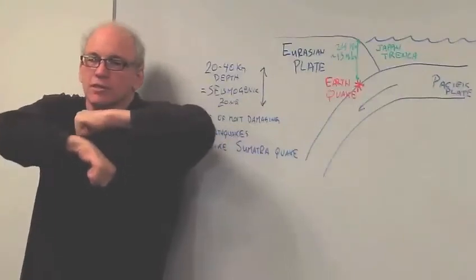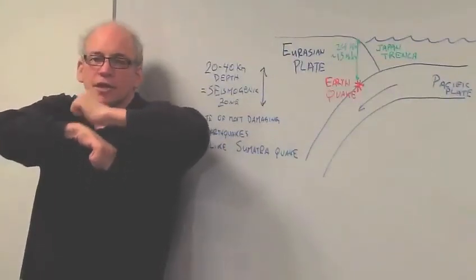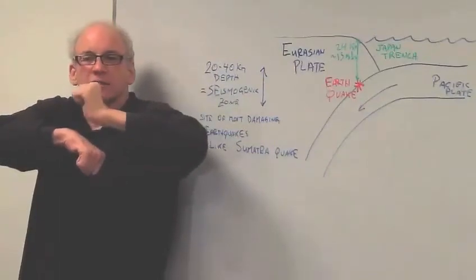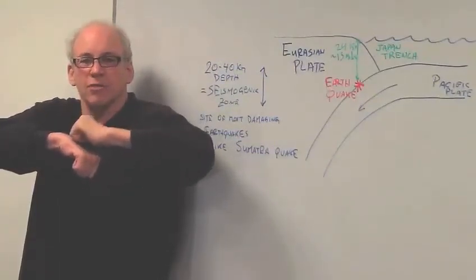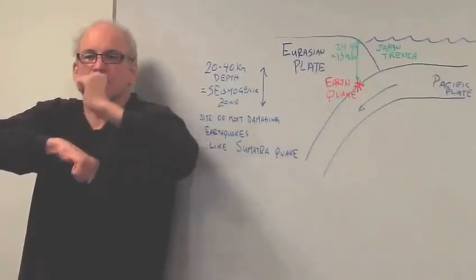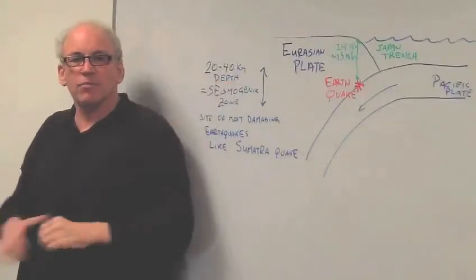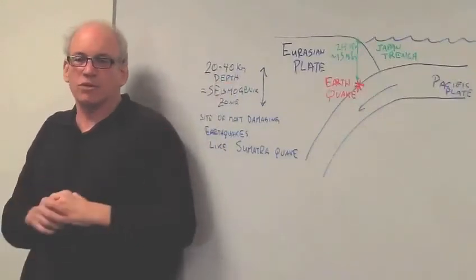All of the strain is released, the earthquake continues, and you get a flexing of the upper plate. That causes something like a reverse cannonball on the seafloor. The seafloor comes up and pushes the water, and that water moves away and becomes what's known as a tsunami.